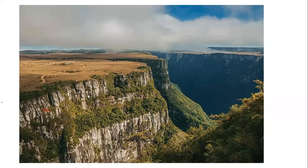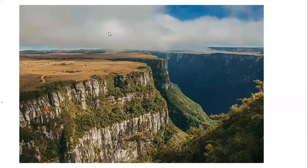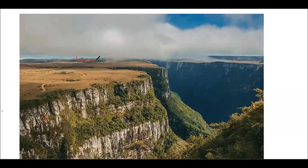Here is an area that is very steep on the sides but flat at the top — this is a plateau. The land rises all around and then is flat at the top. On a map, the plateau is identified by the innermost contour line being widely spaced, while the surrounding contours are close together showing the steep sides. Sometimes there are small indentations in the contour lines showing that fluvial activity is shaping the land.